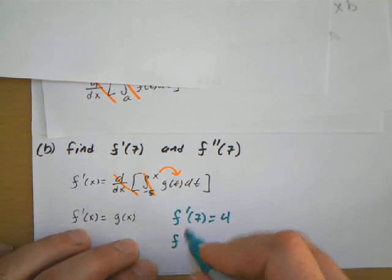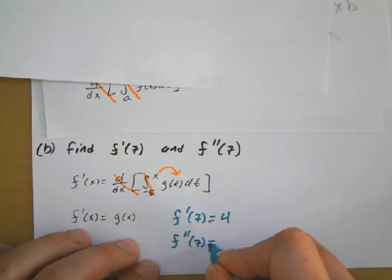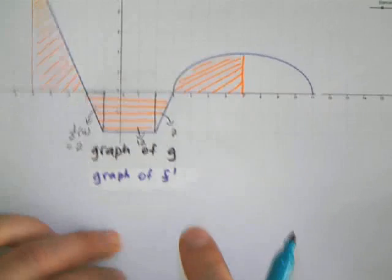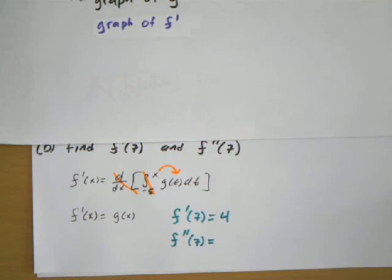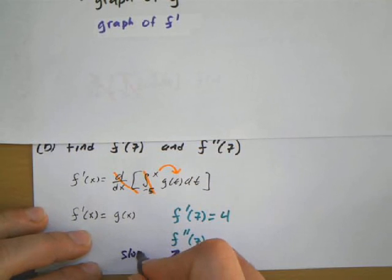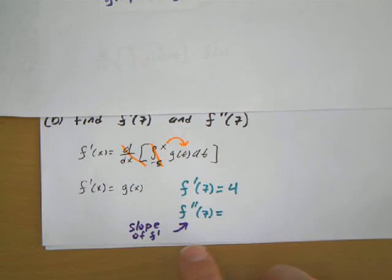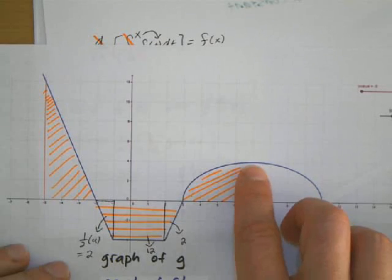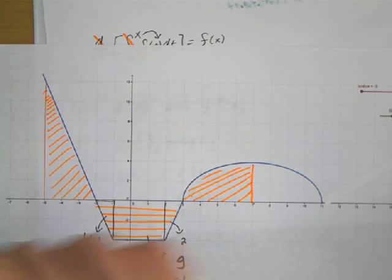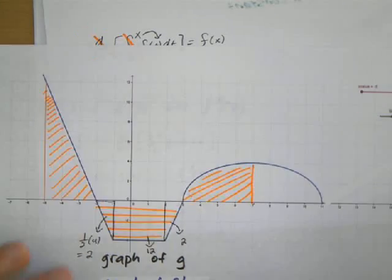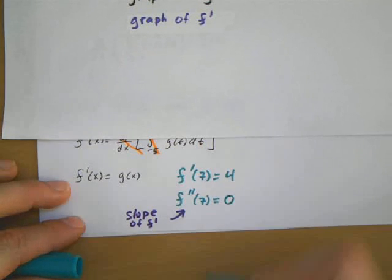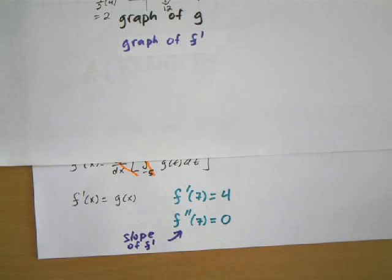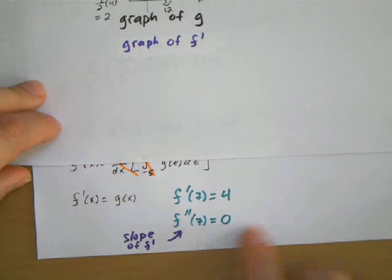Now if I'm finding f double prime of 7, since this is already the first derivative, I'm measuring the slope of this graph. So this is measuring the slope of f prime. The slope of this graph at 7 is going to be at the horizontal tangent line, so that derivative is equal to 0. So f double prime at 7 is equal to 0. And at the end I'll look at what the actual graph of f looks like to see if this all confirms what we're doing.